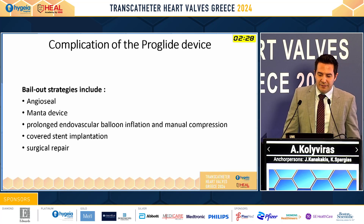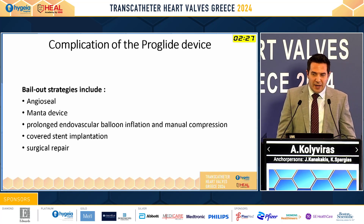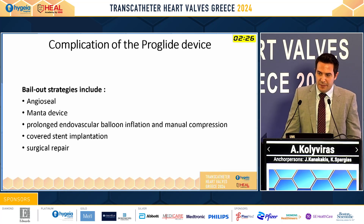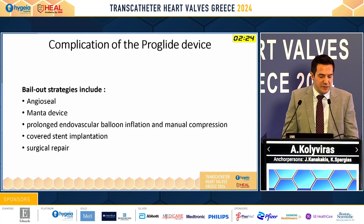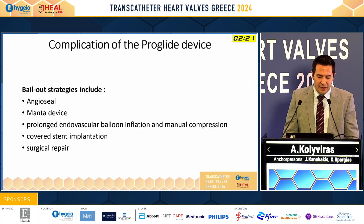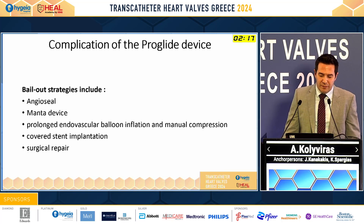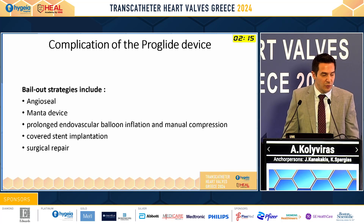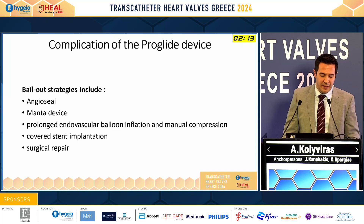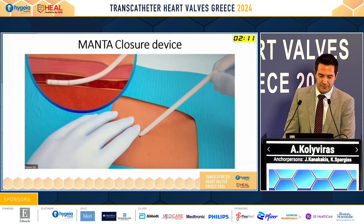If the ProGlide device fails, we have some steps to take. We can use an Angioseal or a Manta device. If this fails, we have to proceed with balloon inflation and manual compression, or use a covered stent and Manta, or go for surgical repair.